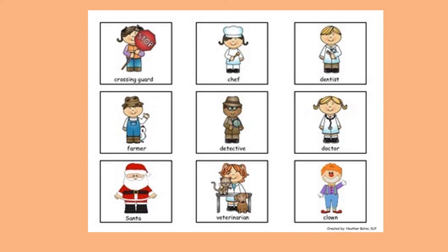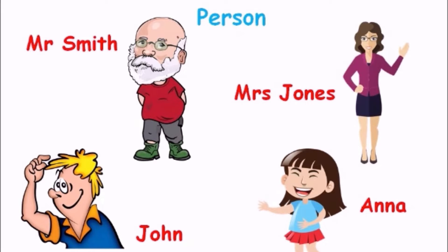Here we have some people, and they have common nouns. But there's only one Santa, one chef, one dentist, and they must have a name. Can you give them a proper noun? Persons always have proper nouns, always written with the first letter in uppercase. The proper noun would be Mr. Smith, Mrs. Jones, John, and Anna.